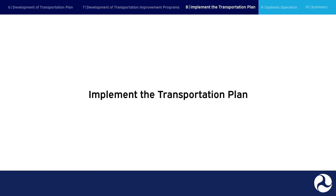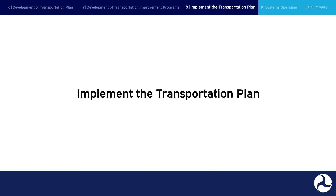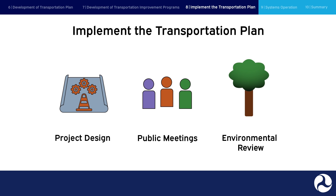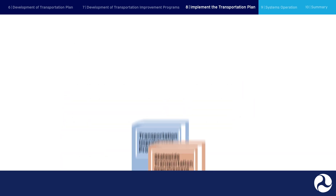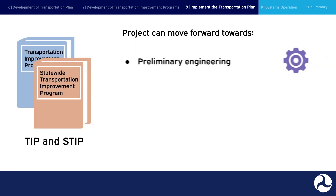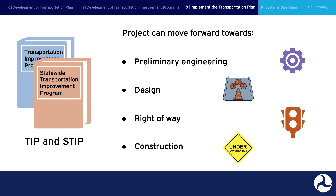Implement the Transportation Plan. Projects recommended in the MTP are programmed in the TIP for funding and then move toward implementation. Project design, public meetings, and environmental review take place as the project gains additional depth and detail in the development process. When the project and funding receive approval to be programmed in the TIP and STIP, the entity managing and building the project can move forward towards preliminary engineering, design, right-of-way, and construction. Contracting and construction practices vary between states, organizations, and municipalities, so you'll want to consult your agency's contracting and construction management guidelines for more information.